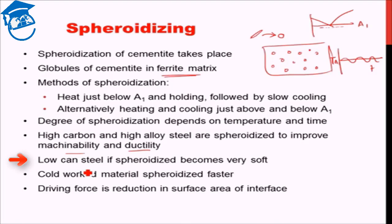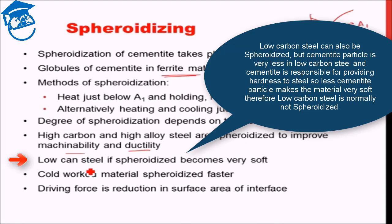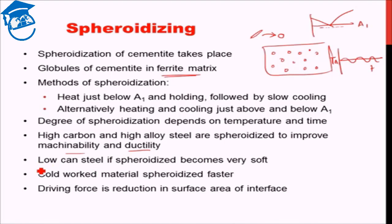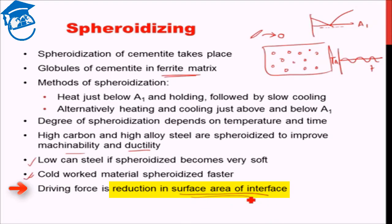Low carbon steel can also be spheroidized, but the cementite particles are quite few in low carbon steel, and those cementite particles are what provide hardness to the steel. If we get rid of those hard particles, the whole material will become very very soft. So basically low carbon steel is not spheroidized. The driving force for spheroidization is reduction in surface area of the interface, which leads to reduction in total energy of the system, and is a favorable process provided the kinetics is supported by giving it sufficient temperature.